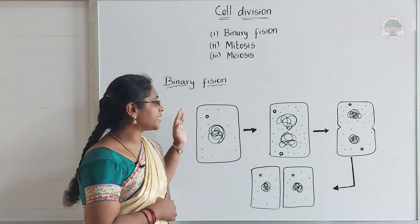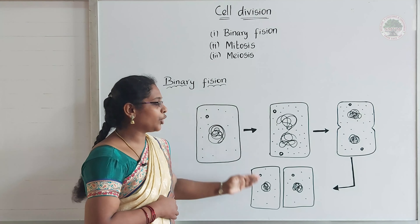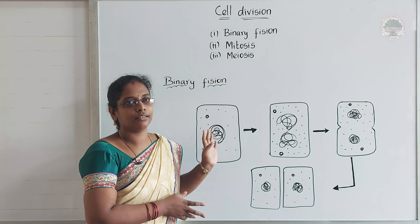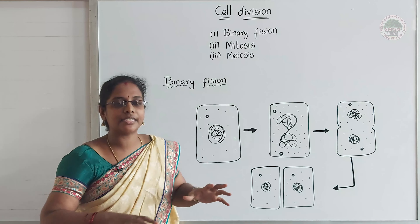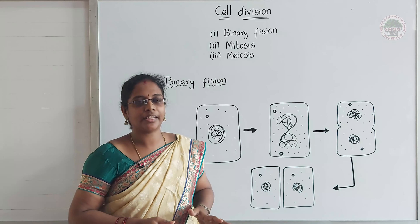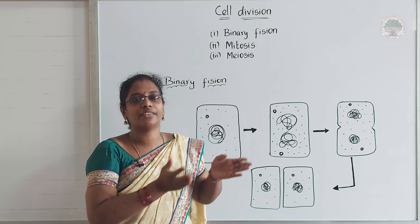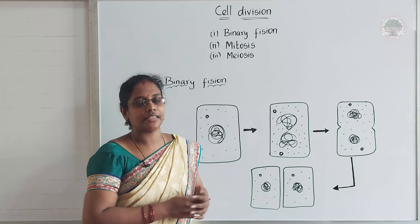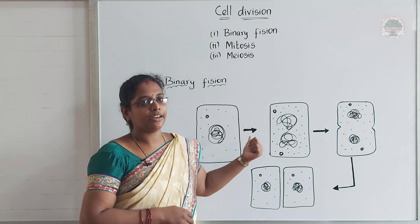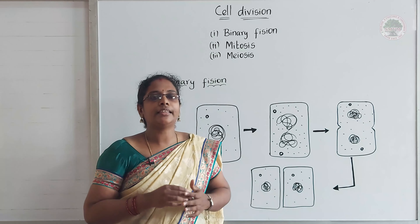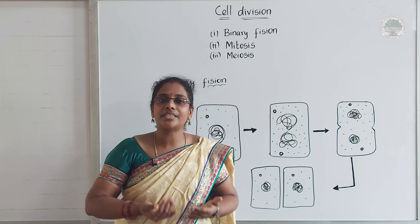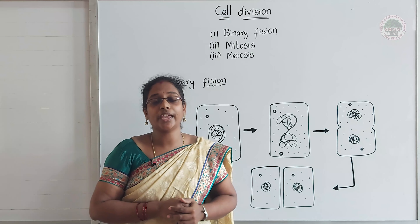This is how binary fission happens. If you see the parent cell and daughter cell, the daughter cell is an exact copy of the parent cell — all the cell matter, DNA, RNA, everything is the same. For example, E. coli bacteria, which lives in our gut, makes two copies of itself within just 20 minutes.